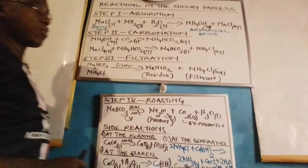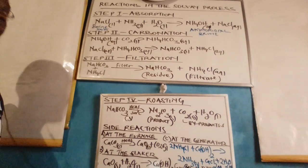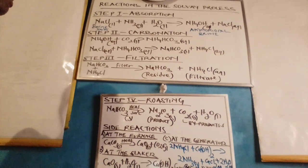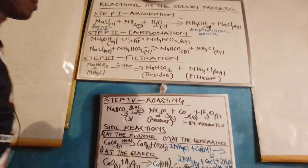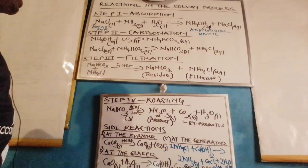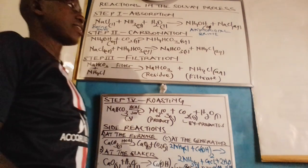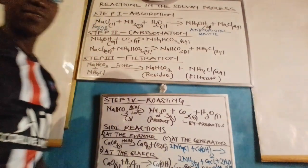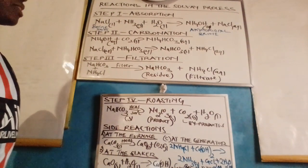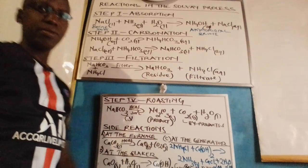Once the ammoniated brine has formed, remember: when brine solution was introduced in the absorption chamber in the presence of ammonia and water, the main reaction which occurred was between ammonia dissolving in water, forming ammonium hydroxide. The brine solution was simply rendered aqueous — it has not so far reacted, but has been rendered aqueous.